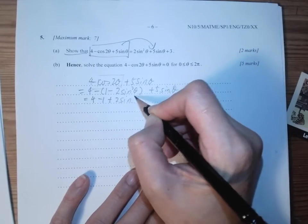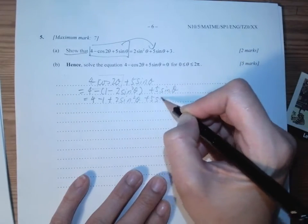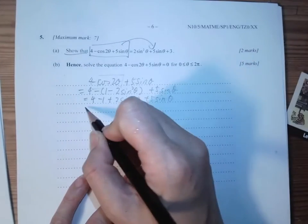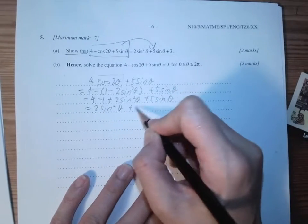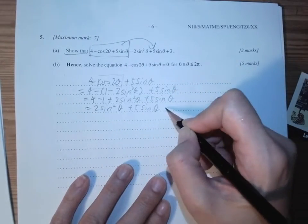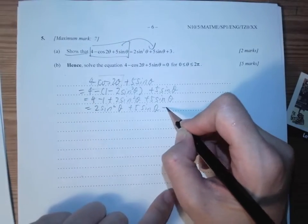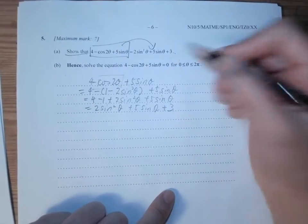plus 2sin²θ plus 5sinθ. Rearranging it, then I will have 2sin²θ + 5sinθ. 4 - 1 is 3, so it's +3. That was what we want, and this is done for part (a).